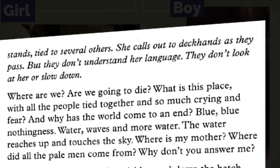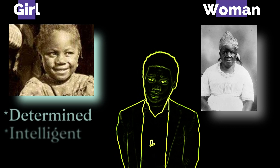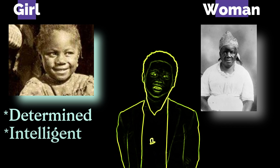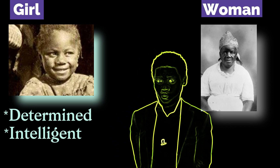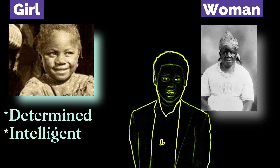Girl at first is terrified, frightened of the white men, the dark ship, the thought of never seeing her family and home again. Anyone would be frightened in this situation, not to mention a child. However, Girl shows a spirit of determination and cleverness and proves to be a fast learner as she gleans from Woman, taking interest in the Anansi stories.